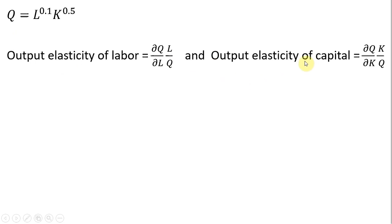The output elasticity of capital is given by the marginal product of capital, which is the partial derivative of the production function with respect to capital, multiplied by K units of capital divided by Q output.